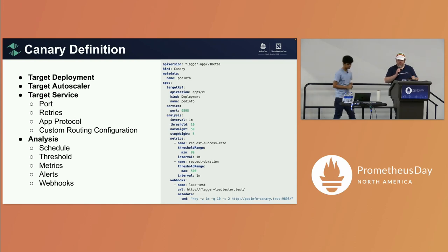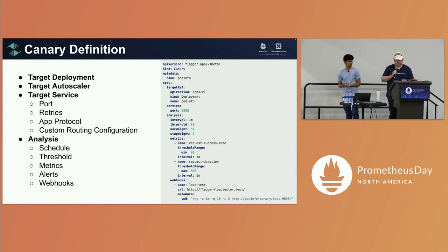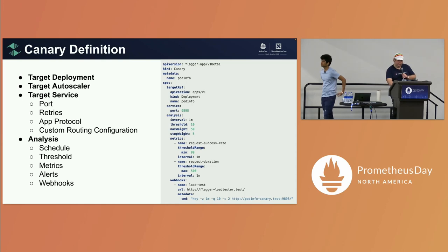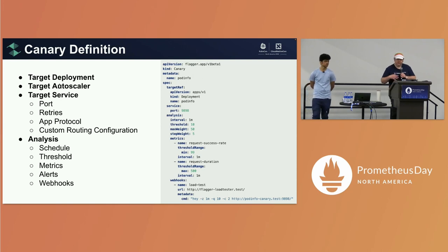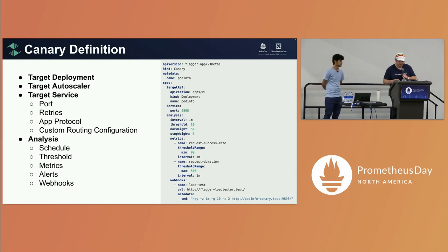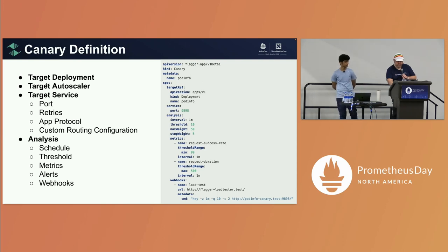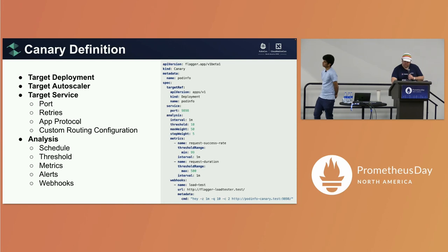We're going to talk about the canary definition — this is the main unit of currency in Flagger. We define a canary starting with some targets: a target deployment, a service, and optionally an autoscaler ref — which Flagger will create. We also have an analysis section, which is really the interesting part.